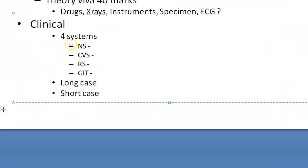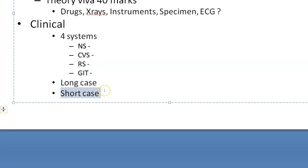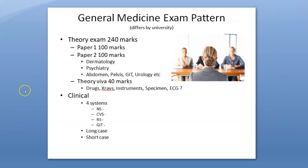For the clinical exam in the hospital, you will have one long case and two short cases. The long case can be from the nervous system, cardiovascular system, respiratory system, or gastrointestinal tract. Short cases usually cover whatever system you didn't get in the long case. For example, nervous system cases include stroke and upper motor neuron lesions; CVS can have rheumatic fever; respiratory can have emphysema or asthma; and GIT can have liver disease.